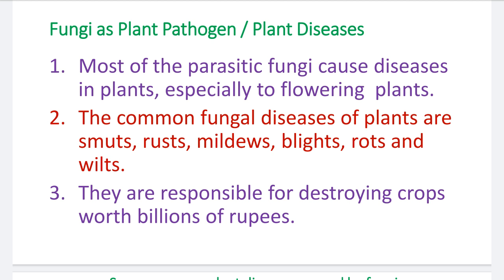First point: most parasitic fungi cause diseases in plants, especially flowering plants. There are different types of agricultural plants — cereals, pulses, seed grains, oil-yielding plants, cotton, vegetables, and fruit-yielding plants. A variety of plants grow in agriculture and they are economically important as food material for human beings. These suffer from fungal infection, and fungi cause a number of diseases on these agricultural plants.